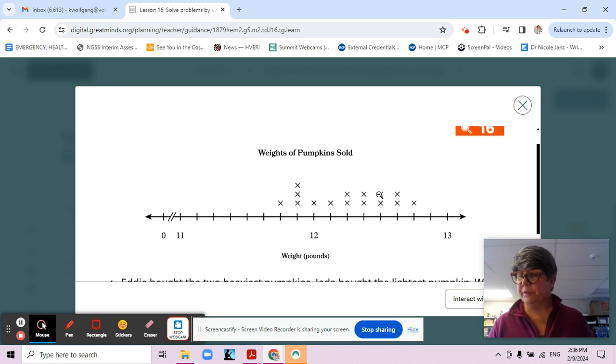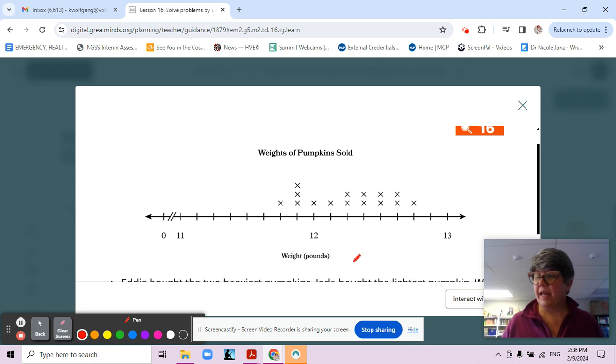Letter g: Julie bought two pumpkins that have a total weight of 25 pounds. Based on the data on the line plot, what could the weights of Julie's pumpkins be? They have a total weight of 25 pounds, so we need to find two pumpkins that add up to 25 pounds. You might be thinking about 12 and 12 makes 24.